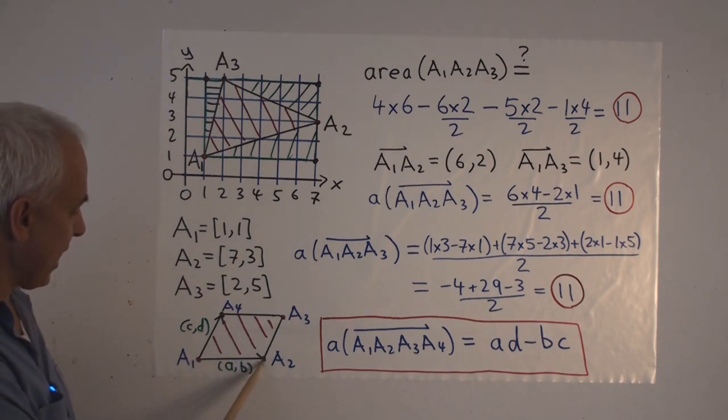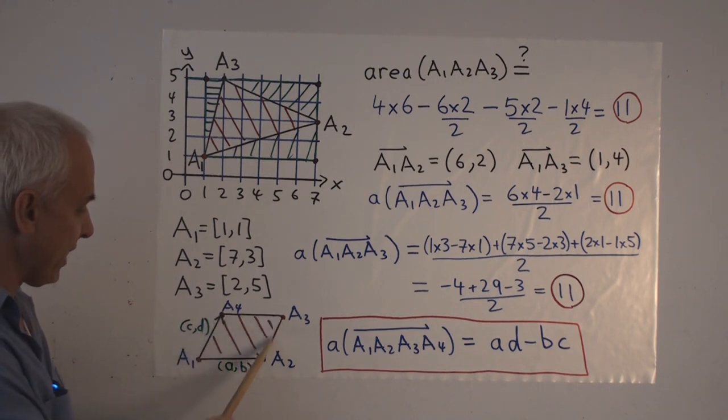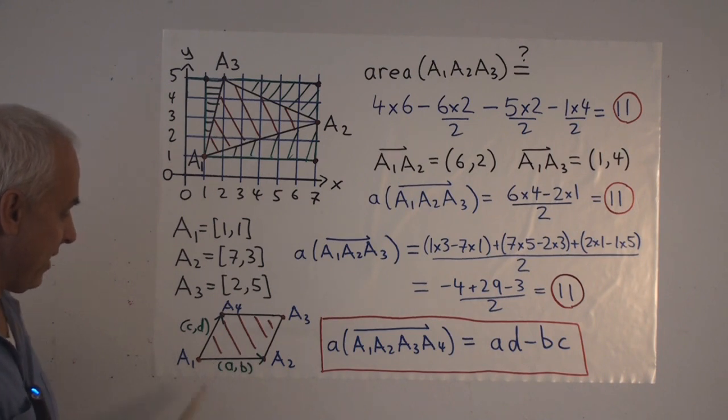Another important case is when we think about a parallelogram instead of a triangle. So suppose that we have a vector here, AB. Another vector, CD. And the parallelogram formed by those two vectors.